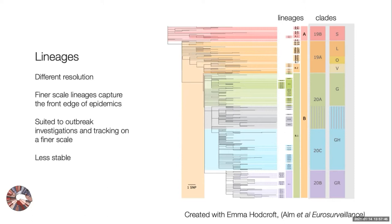At the other end of the scale is the lineage system used for SARS-CoV-2. It operates at a finer resolution and tries to capture the edge of the pandemic, making it more suited to outbreak investigations. Because it's fine-scale and the tree space is uncertain, lineages are less stable — they may come and go with different data releases as more data is produced.